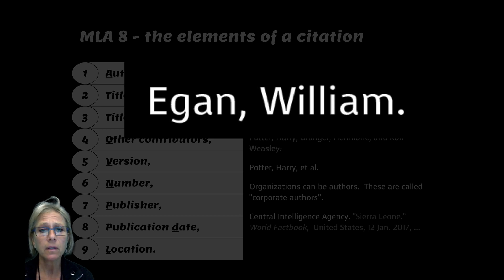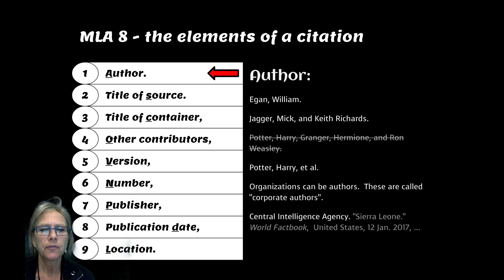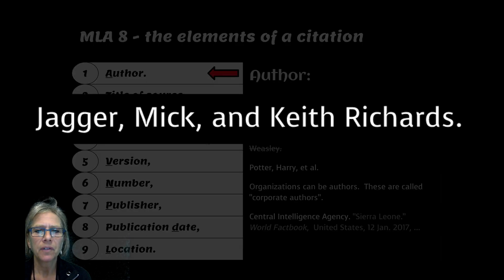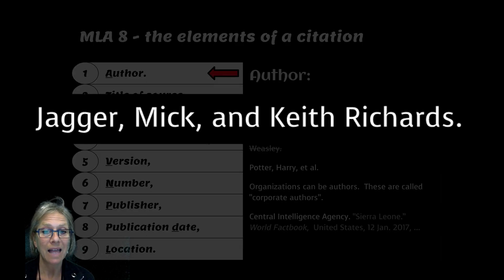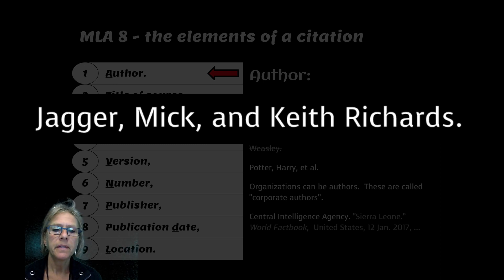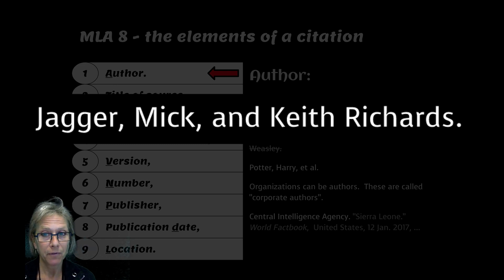If you have two authors, you'll do last name first, comma, first name last, comma, and then use the conjunction AND, first name first, and last name last, period.